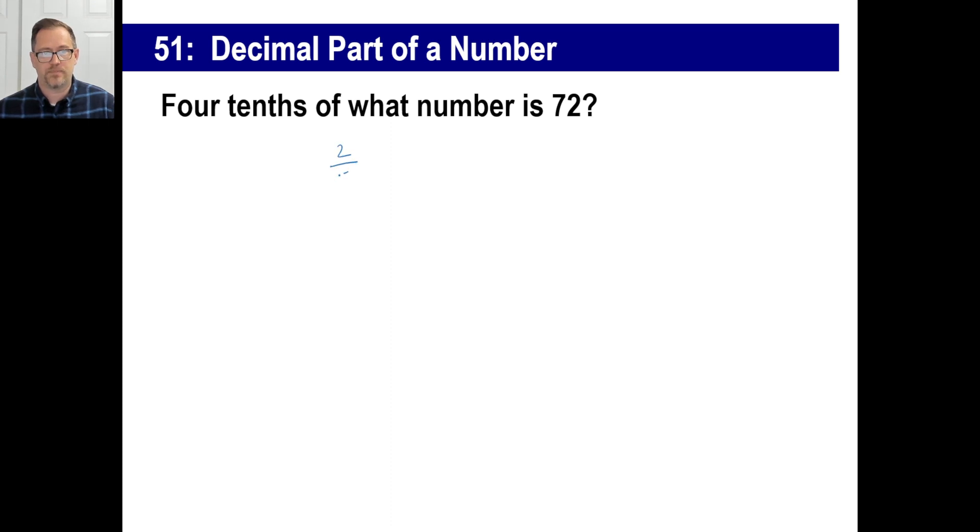Alright. Four tenths. Four tenths. I don't like four tenths. I'm going to do two fifths, same thing. Of what number? Times what number is 72 equals 72. There you go. Multiply by five halves on both sides. I'll put it over 1.